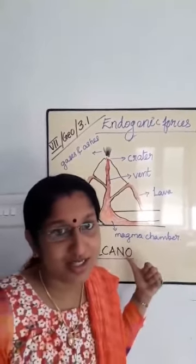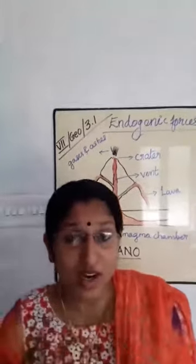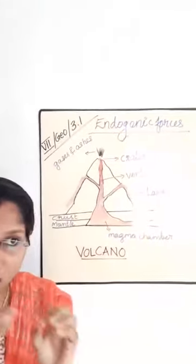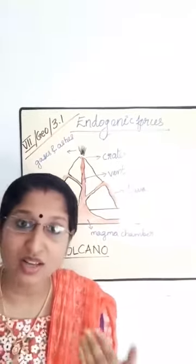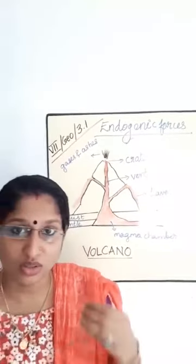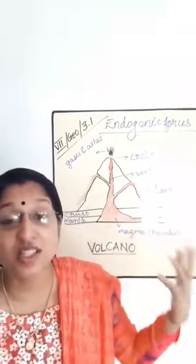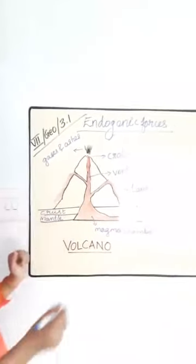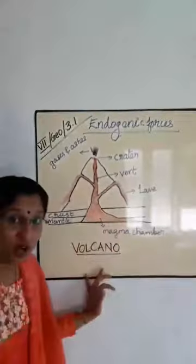First of all, we discuss the volcano. A volcano is a vent on the Earth's crust through which molten material erupts suddenly. This is the picture of the volcano.